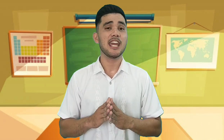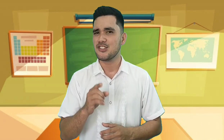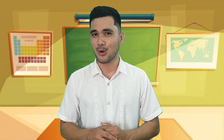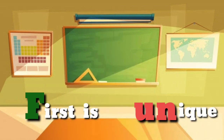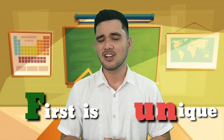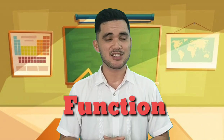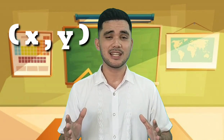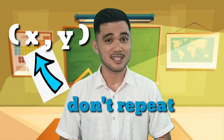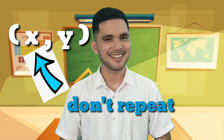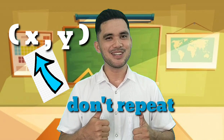I'll give you a tip to easily identify if the relation is a function or not. Just remember the word FUN — First is Unique. If the first element is unique, then it is a function. When we say unique, the first elements must not repeat. Did you get it? Very good!